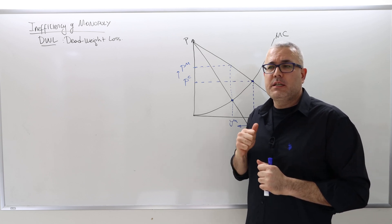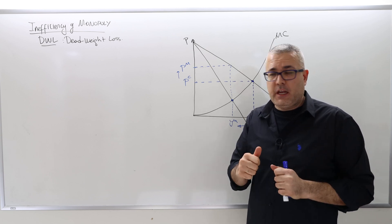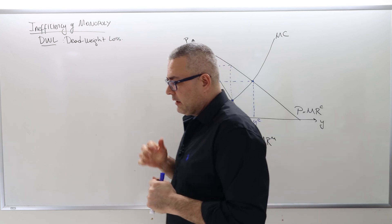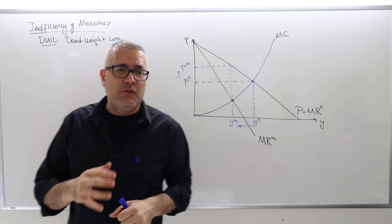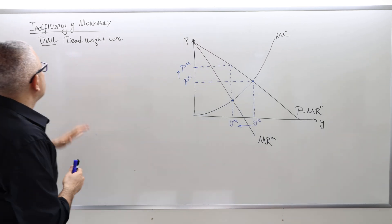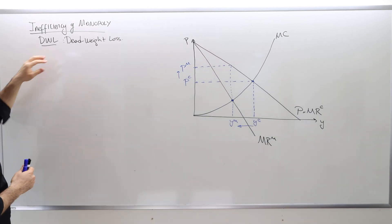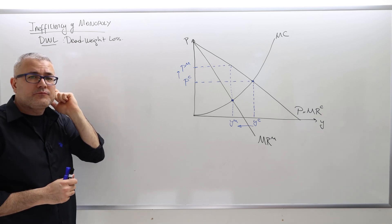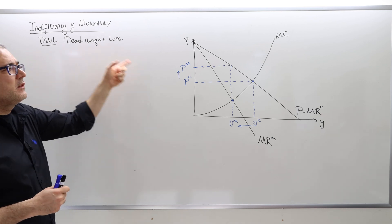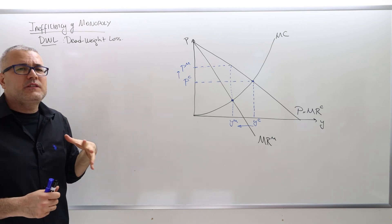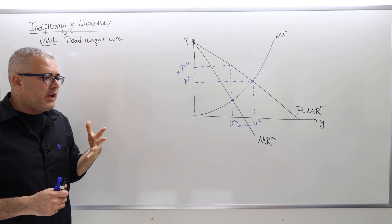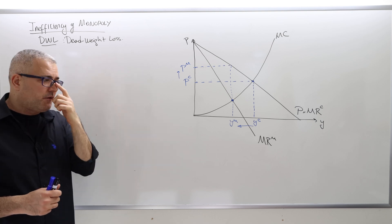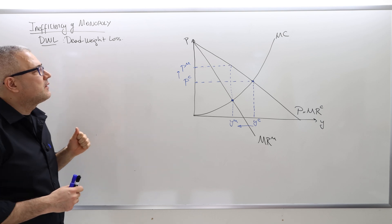In this last video, I'm going to talk about the inefficiency of monopoly. We're going to define a concept called deadweight loss. Deadweight loss is basically a way to measure the size of the inefficiency of the monopolist.